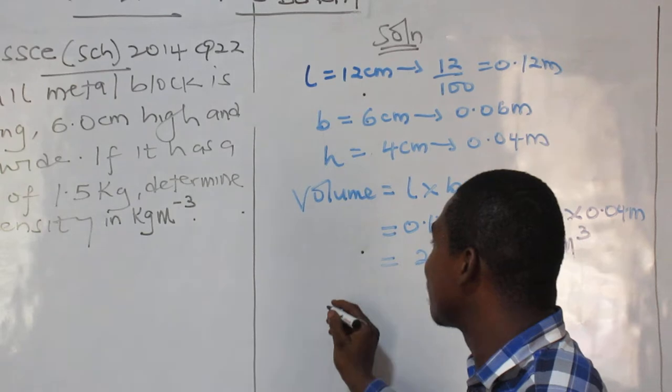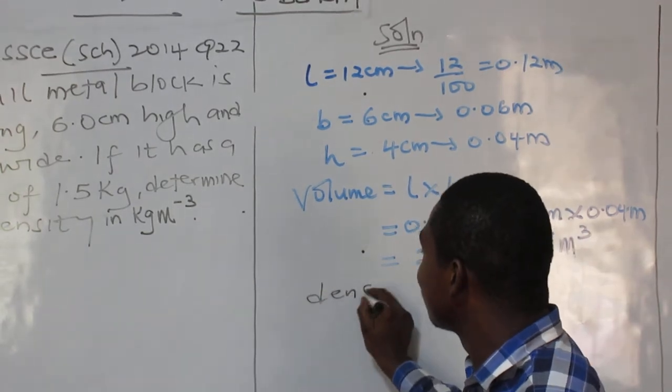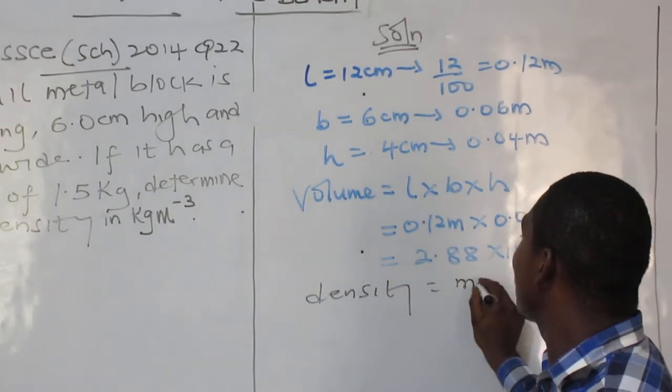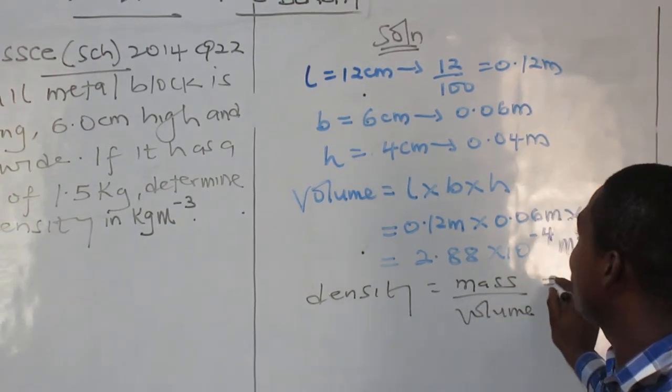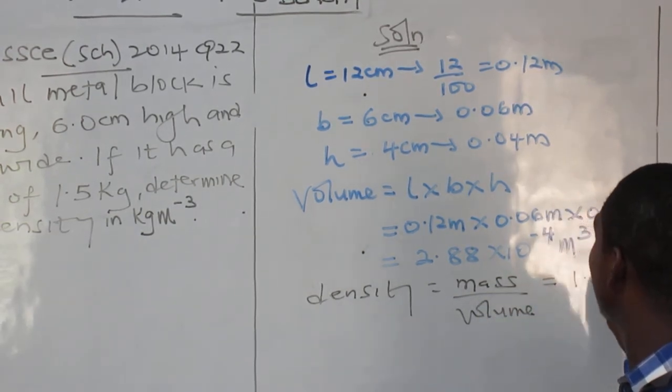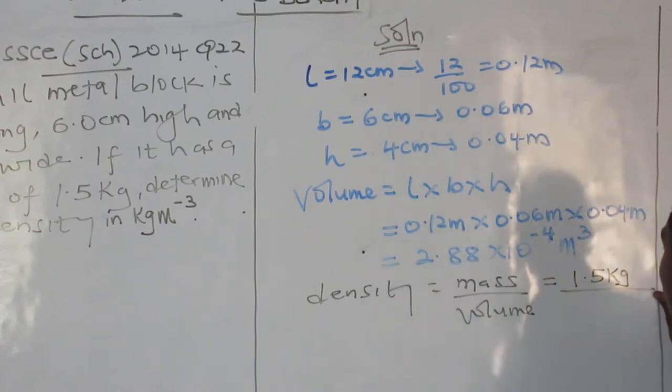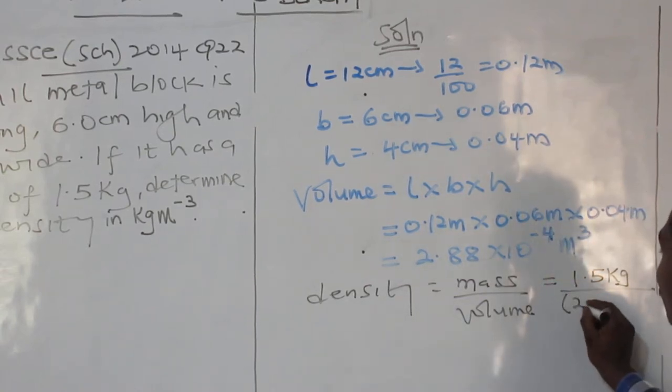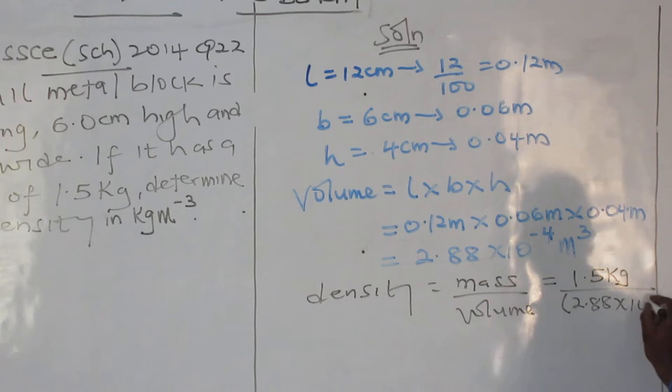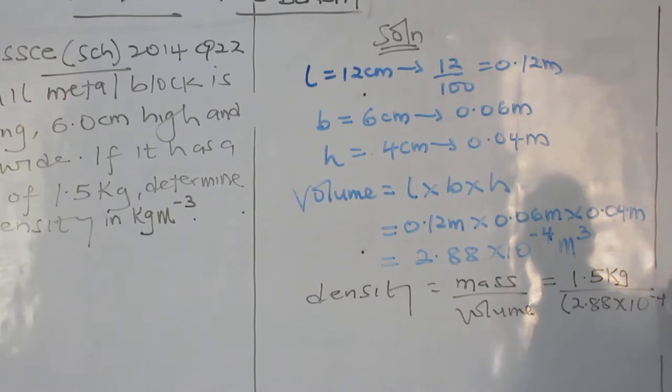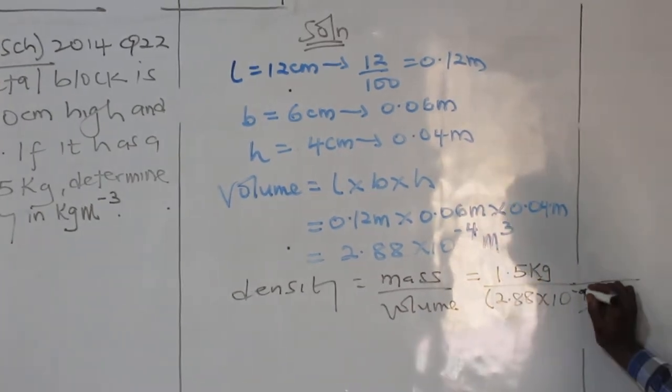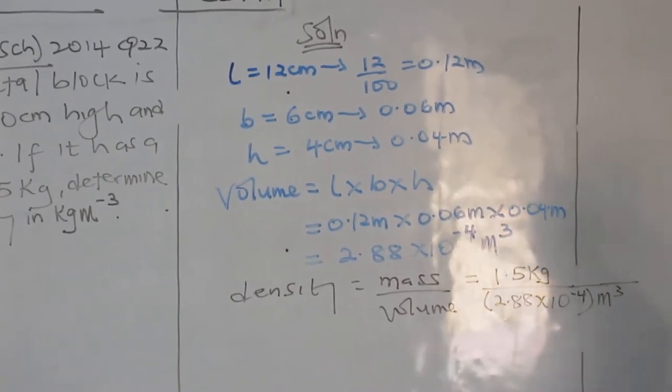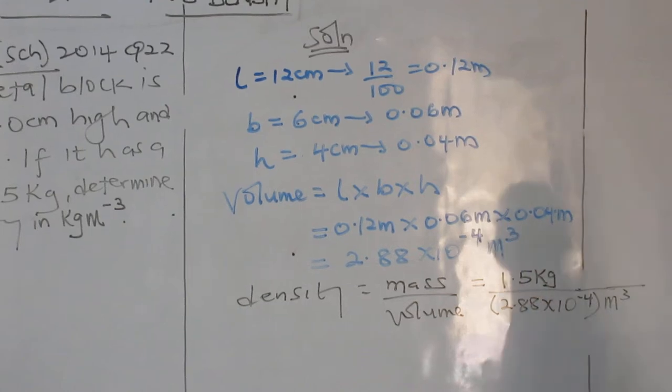Now I've been asked to determine the density. Density equals mass over volume. Now my mass is 1.5 kilograms. And my volume is 2.88 times 10 to the power minus 4 meter cubed. Now what is going on here? When you're dealing with standard forms, when you're punching the calculator, put them in brackets.